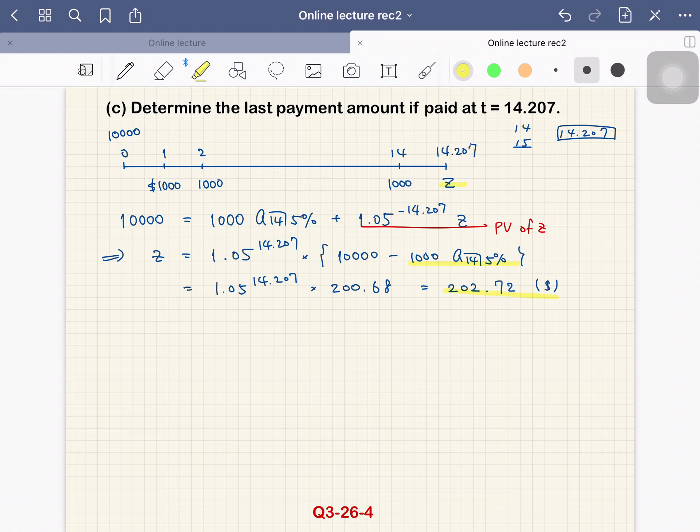We cannot use BA2 calculator because this time point is fractional. Okay, so now you can do quiz 3-26-4. See you then.